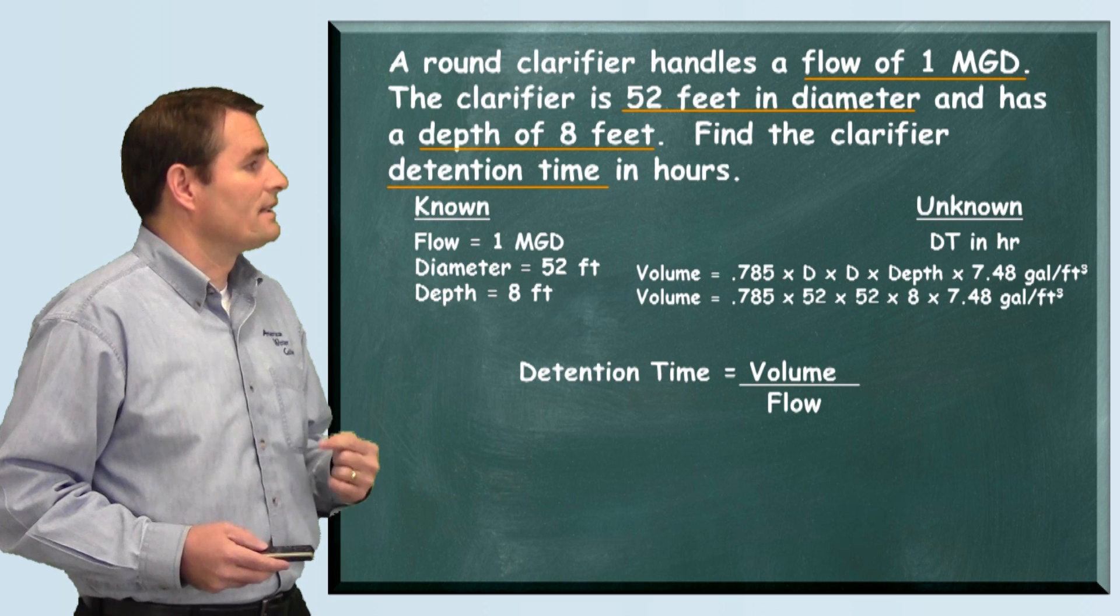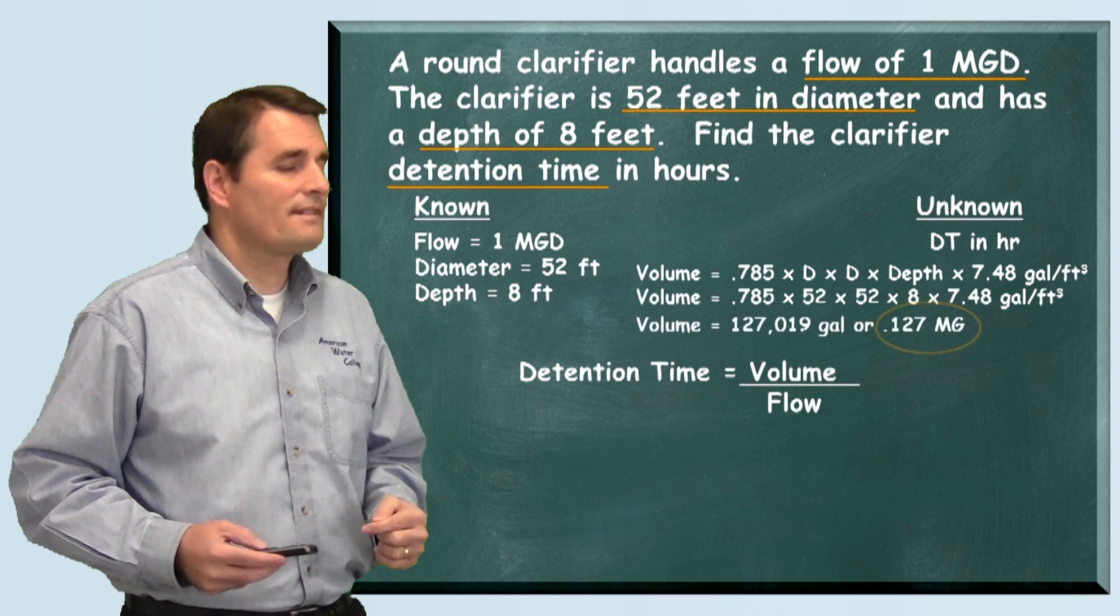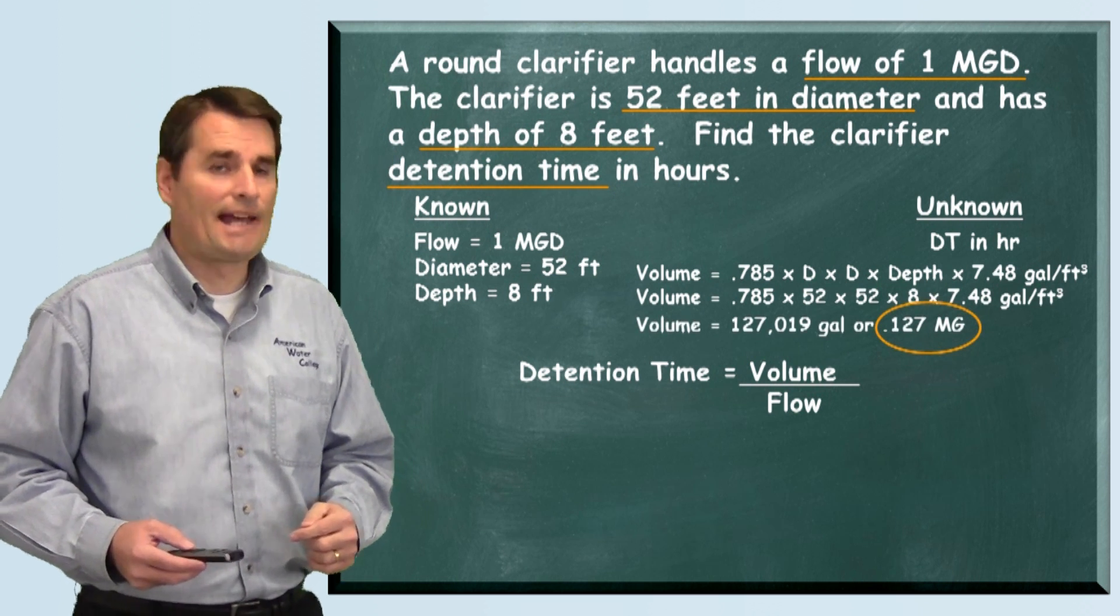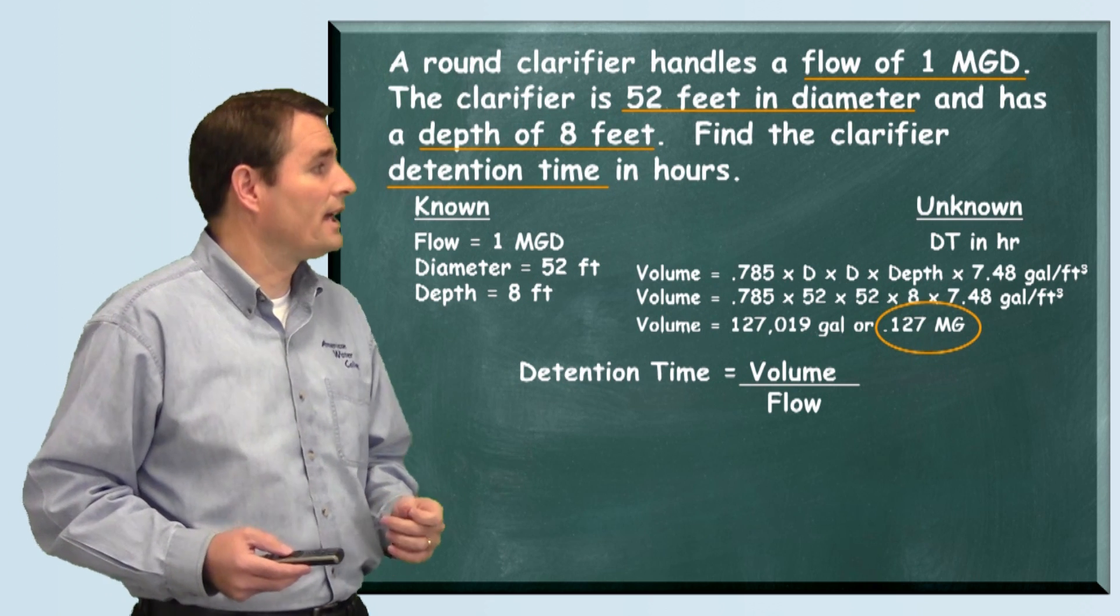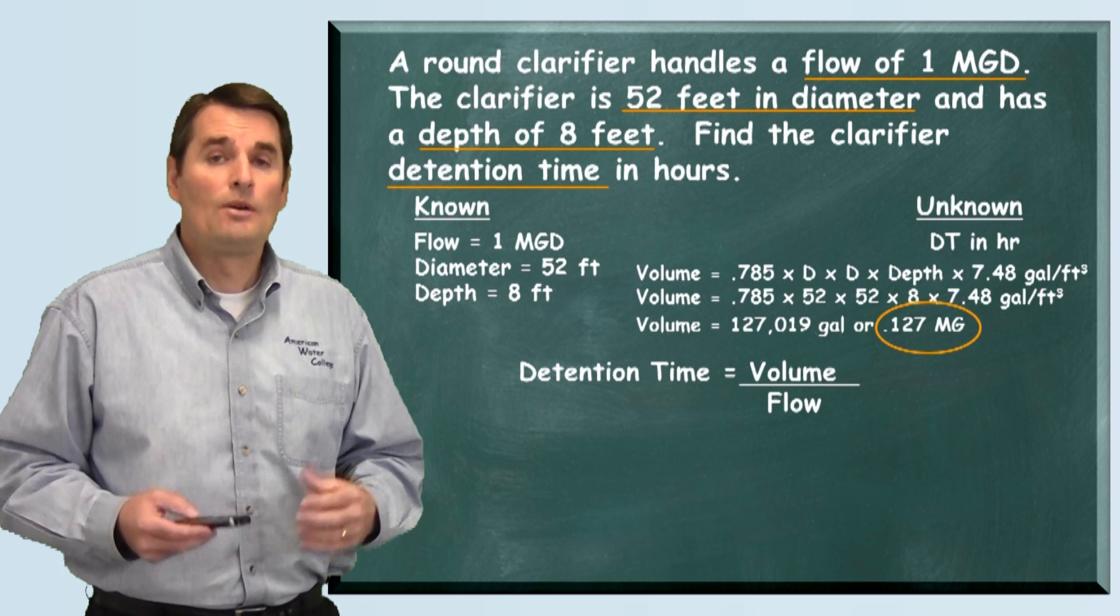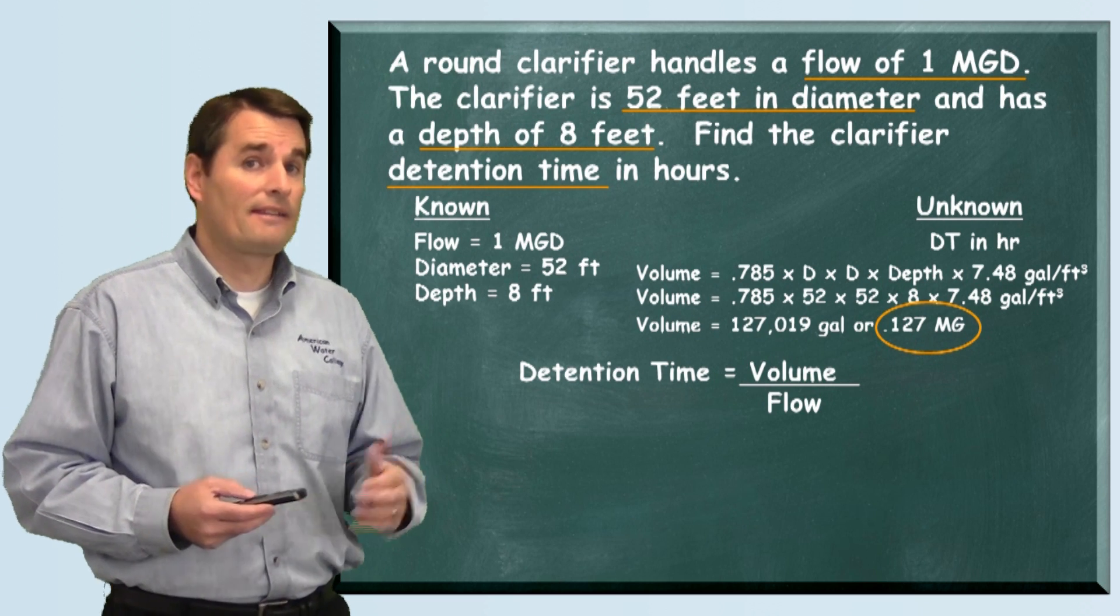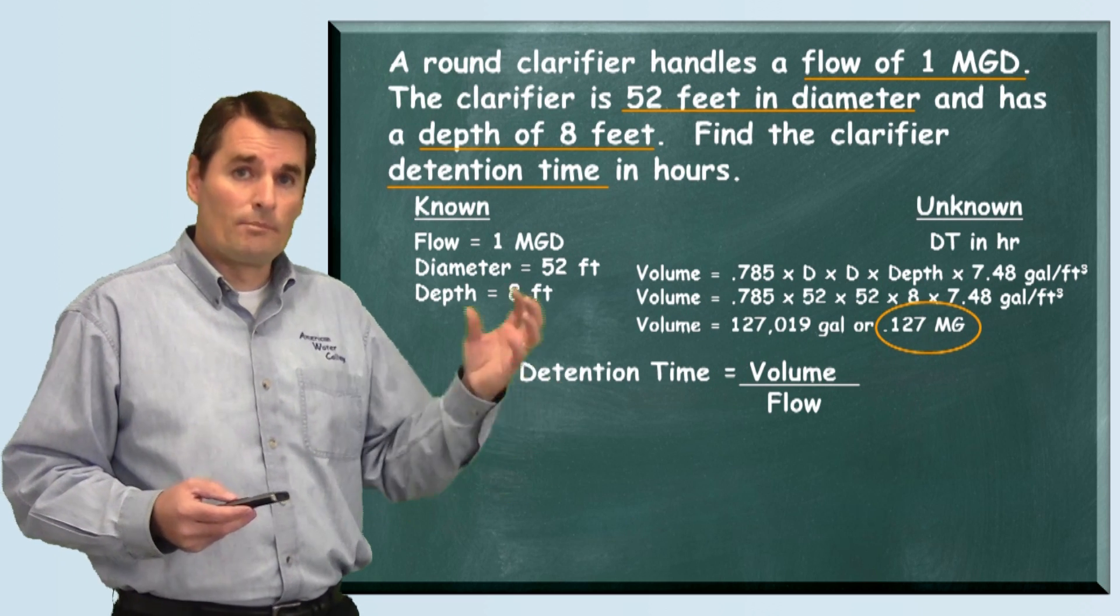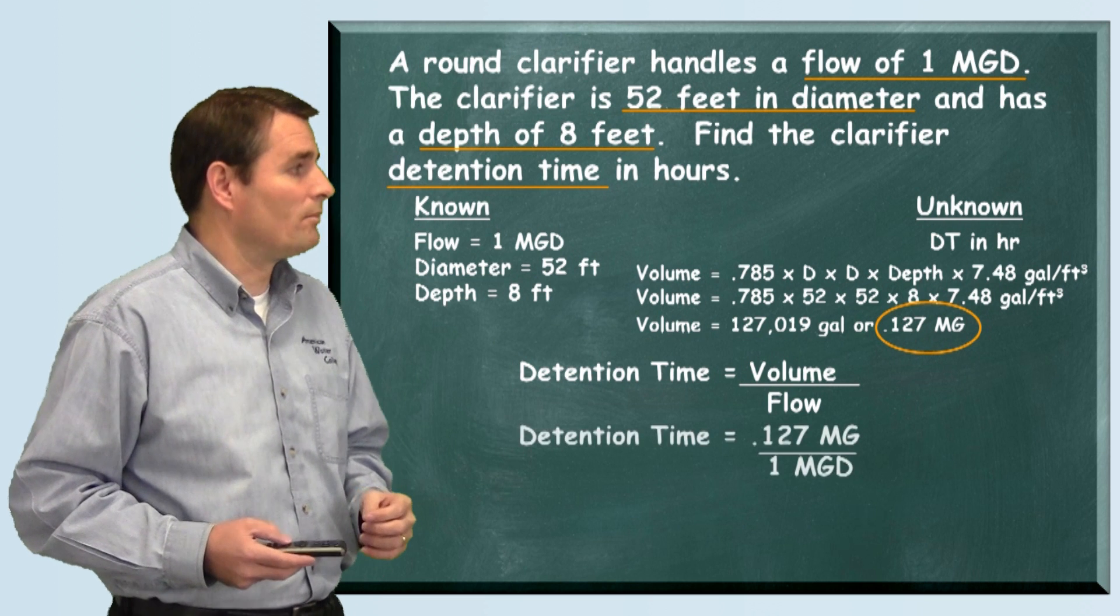When we do that, we see that the volume is 127,019 gallons, or we can also call that 0.127 million gallons. Now that we know the volume of the tank, and they gave us the flow, we can plug those in and solve this problem.